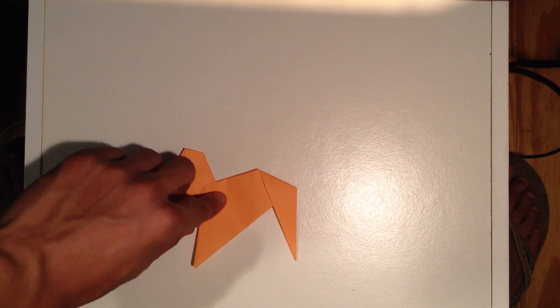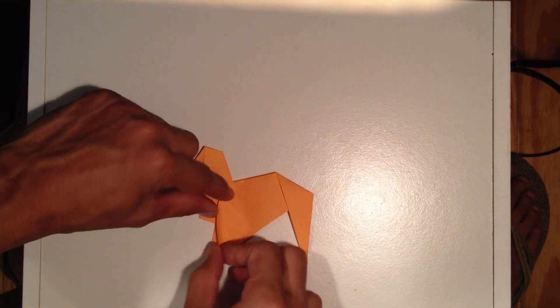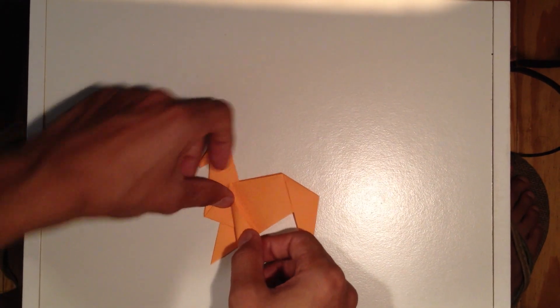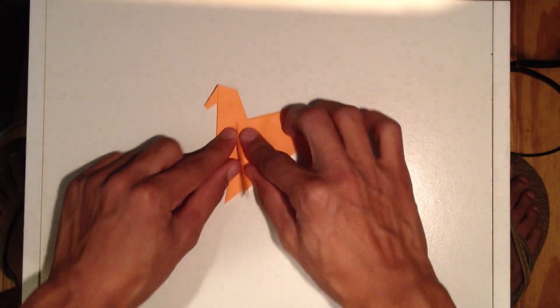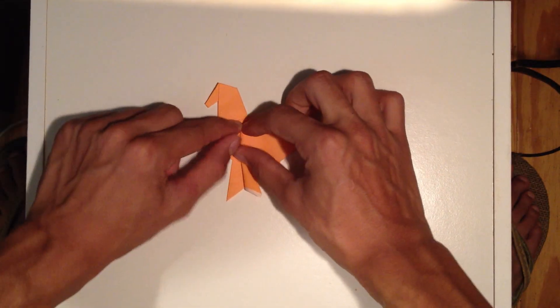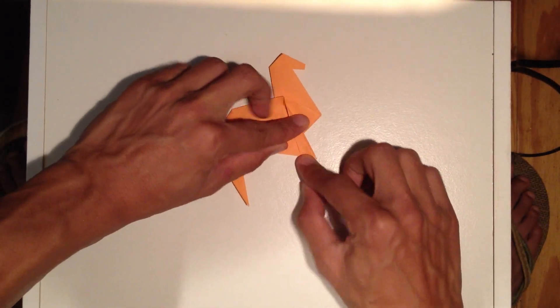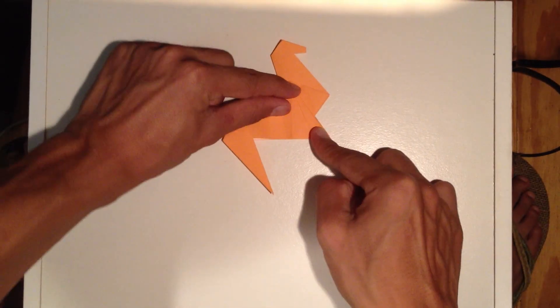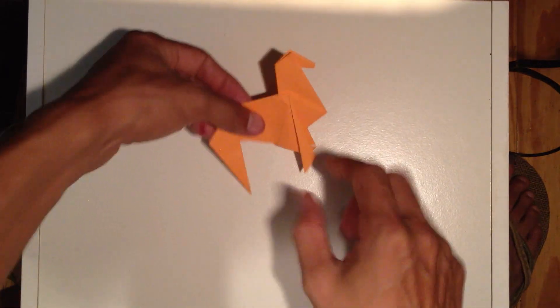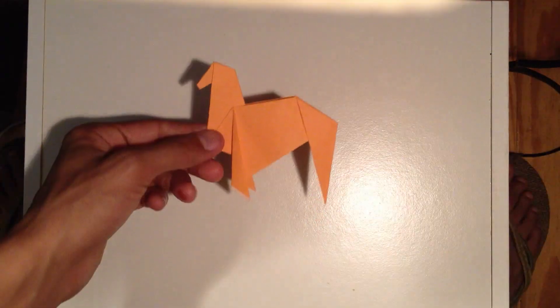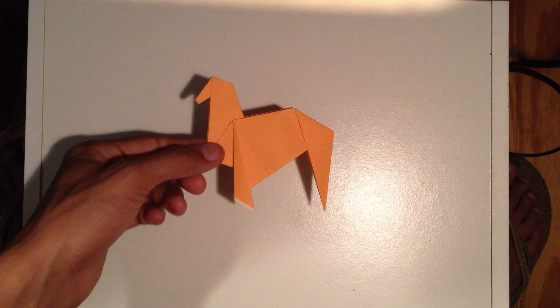Now we've got the back legs set. Next thing we want to do is take the front legs, just a little bit, fold them in. Make them a little skinnier. They're kind of big the way they were. Just come in like that.